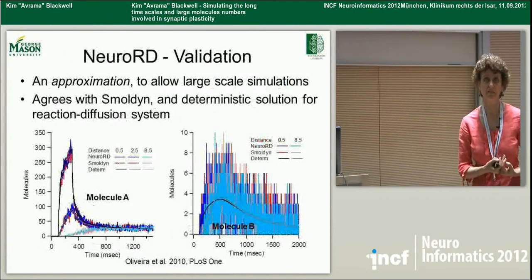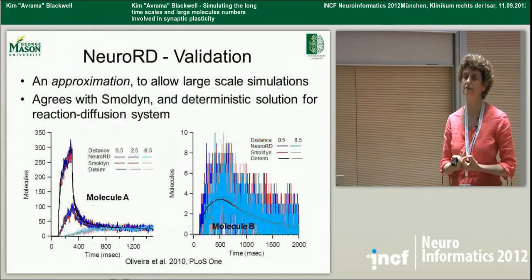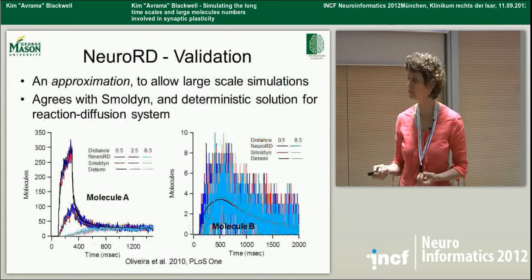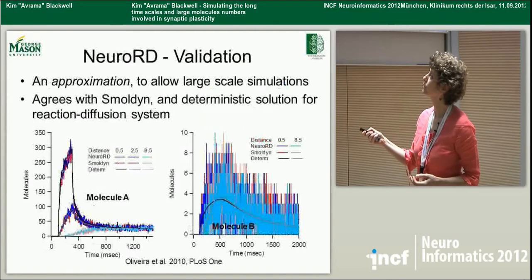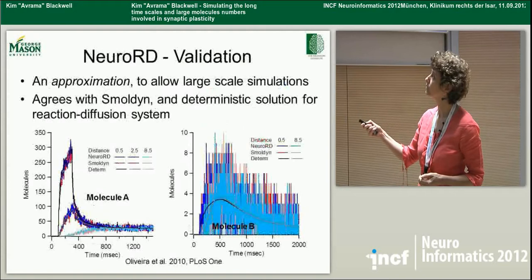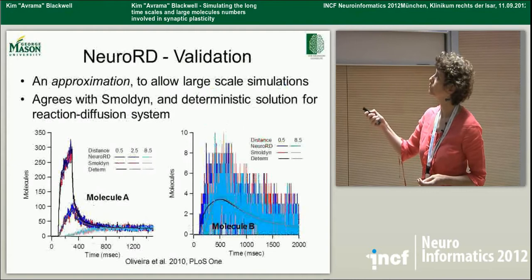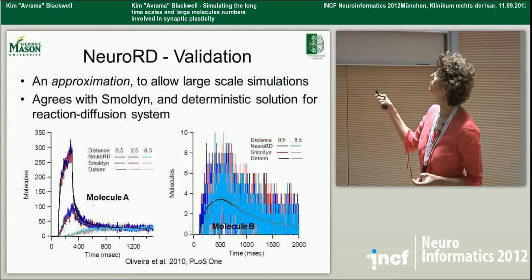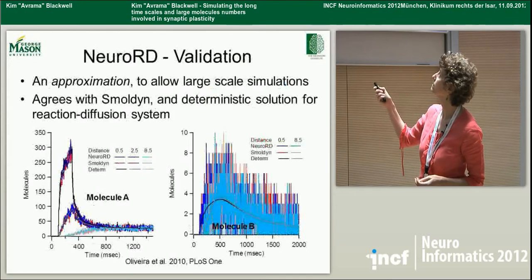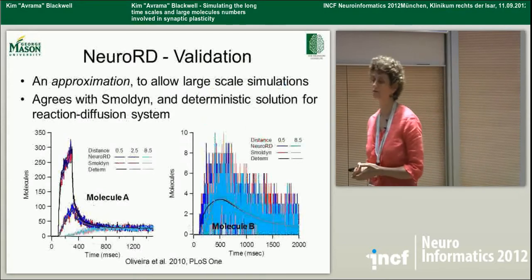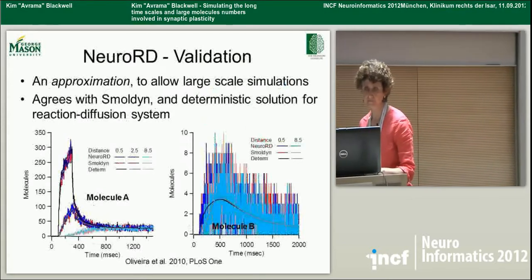This is just one of the validations. This is an approximate algorithm, so it's not exact — it won't exactly reproduce the Gillespie algorithm. But if you don't take too large a time step, you can see that we reproduce the deterministic solution, shown in black or gray, and we also reproduce Smolden. These fluctuations with molecule A, of which there are relatively large numbers, and especially molecule B, of which there are very small numbers — zero to ten — show that we agree well with these other solution systems.